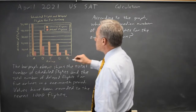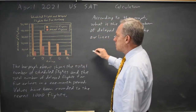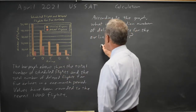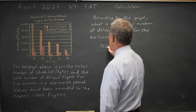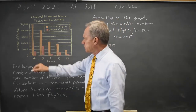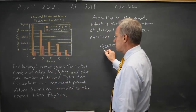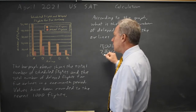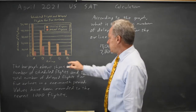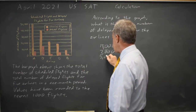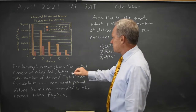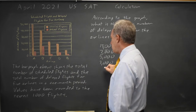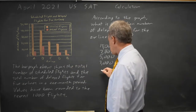Looks like the largest number is airline B, and these are all to the nearest thousand flights, so we can write that as exactly 15,000. The second largest is A, which is probably 7,000. Third would be D, which looks like exactly 5,000, because these are to the nearest thousand. C might be 3,000, and E is the smallest at 2,000.